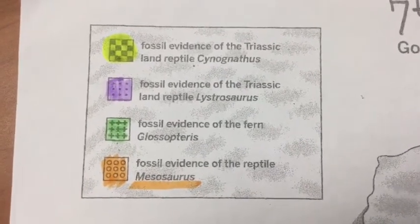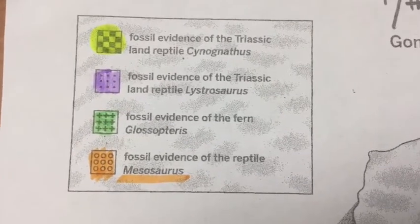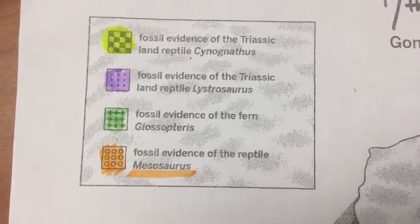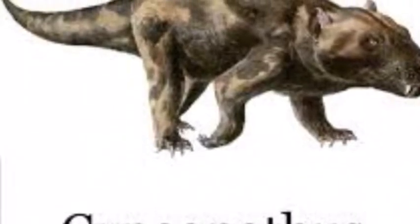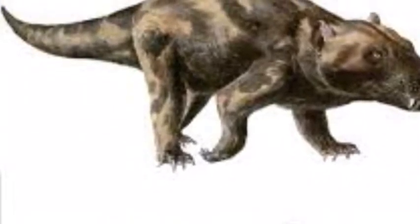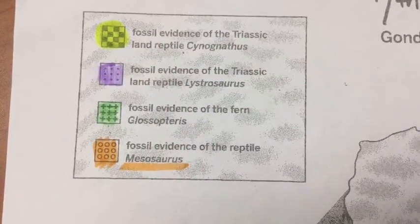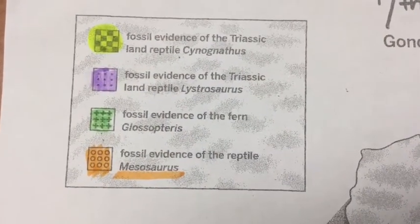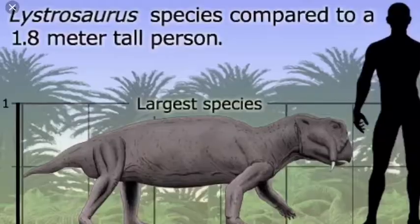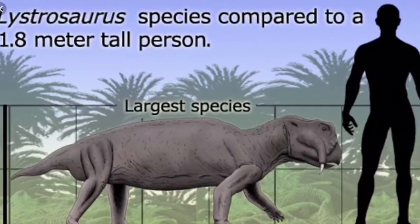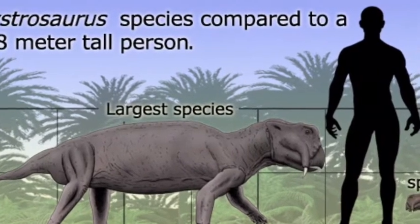I have chosen yellow to represent the fossil of a land reptile called Cynognathus. Here he is — the fossils show us what he looks like. For purple, I'm using that color to represent a Triassic land reptile called Lystrosaurus. He was a much bigger guy. Glad he's not around anymore.